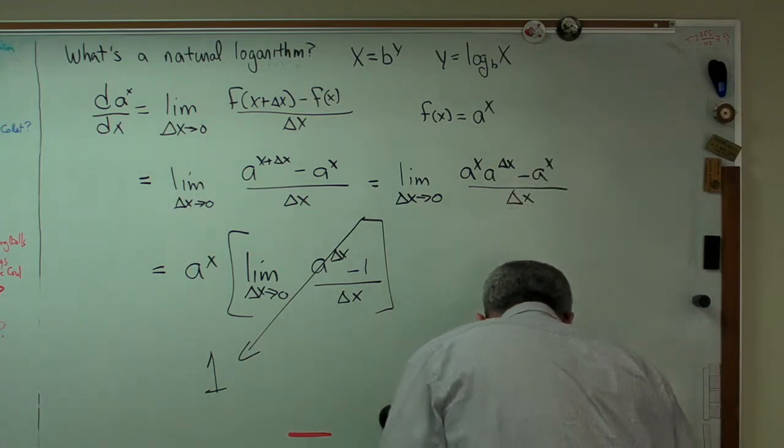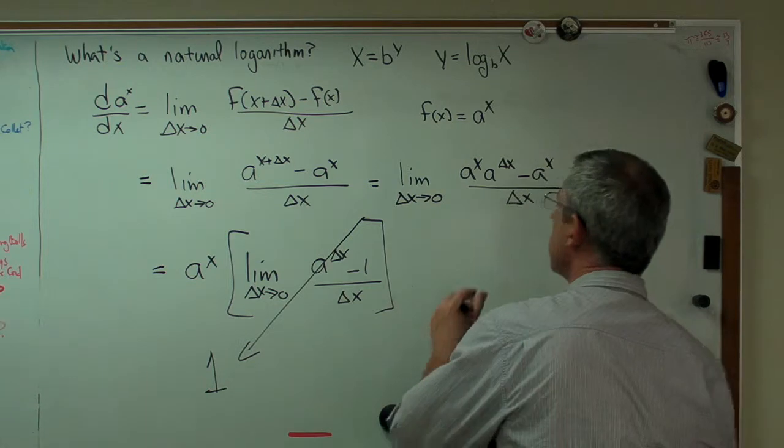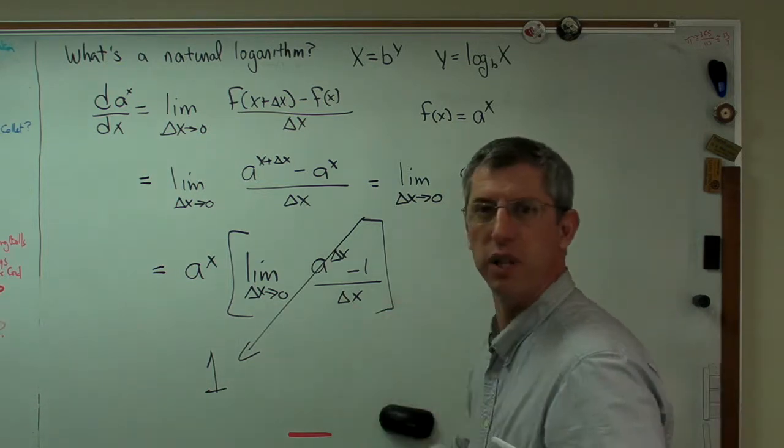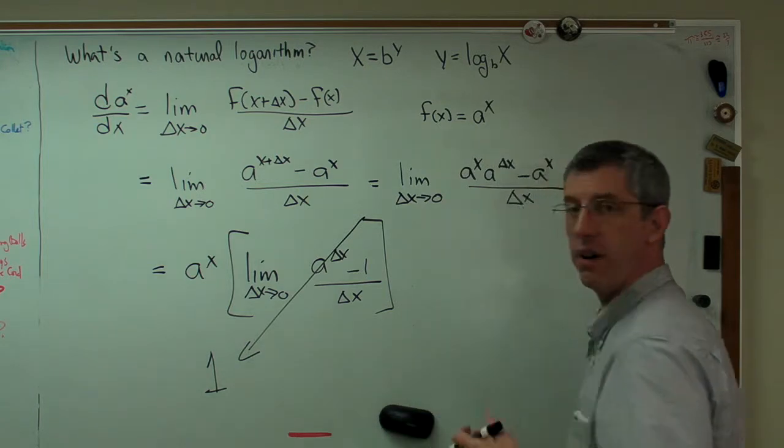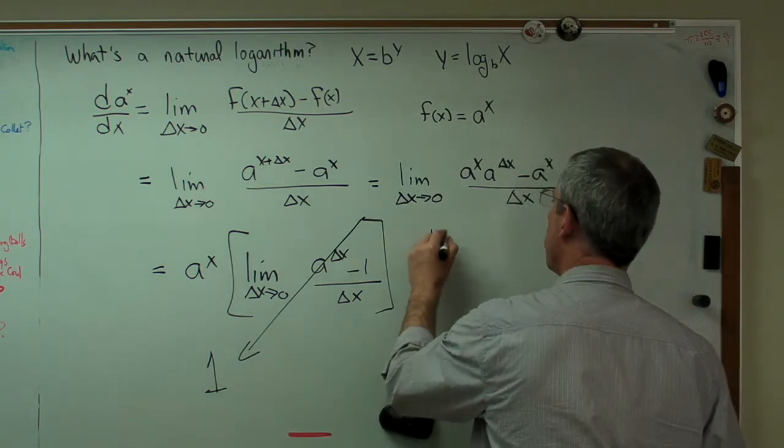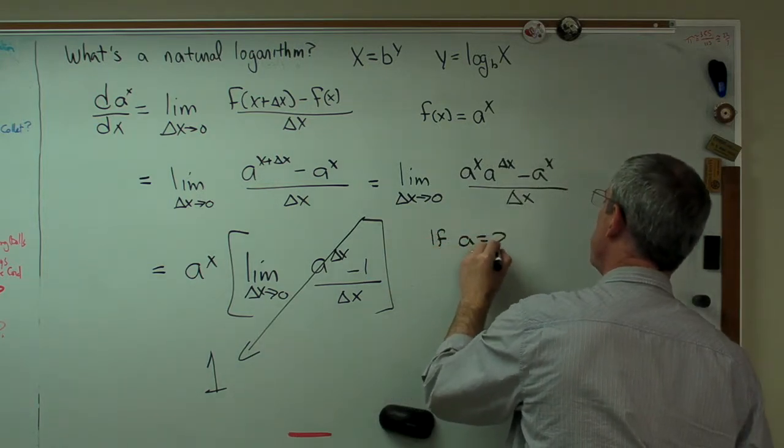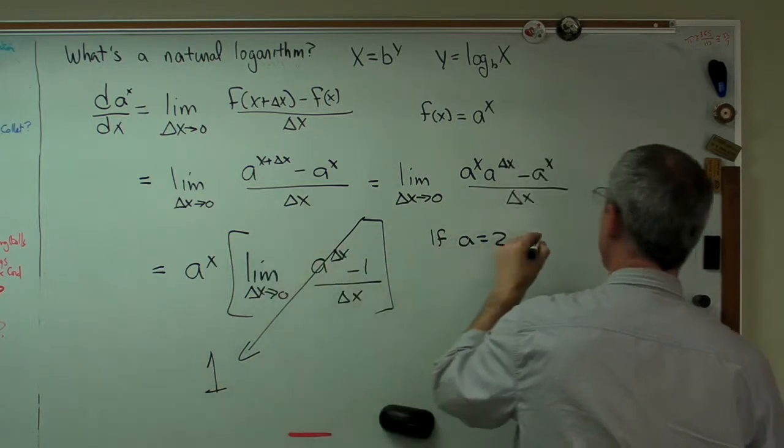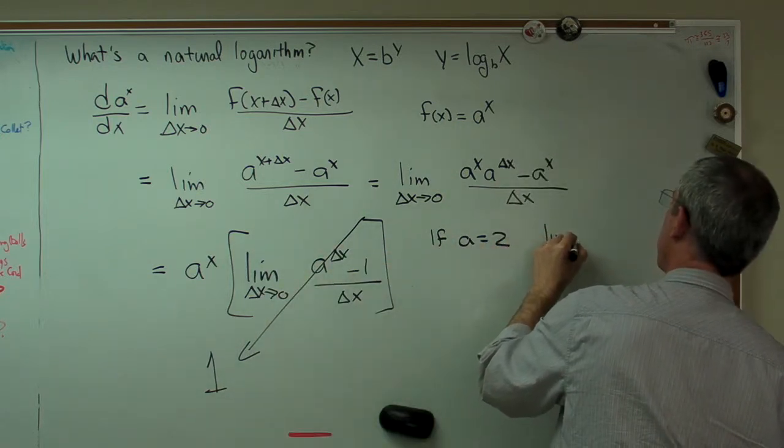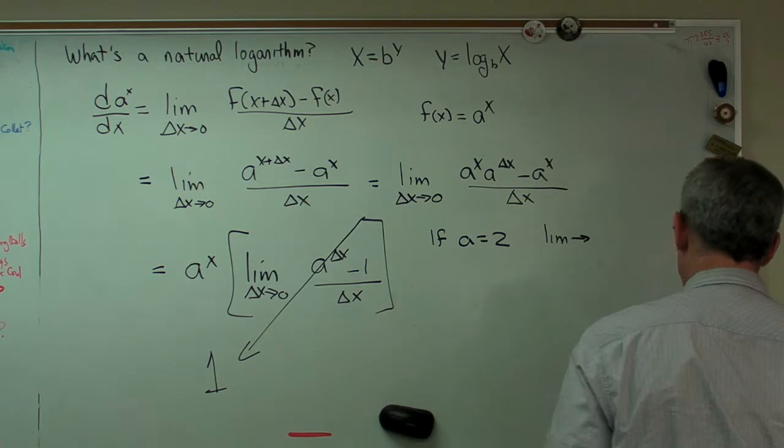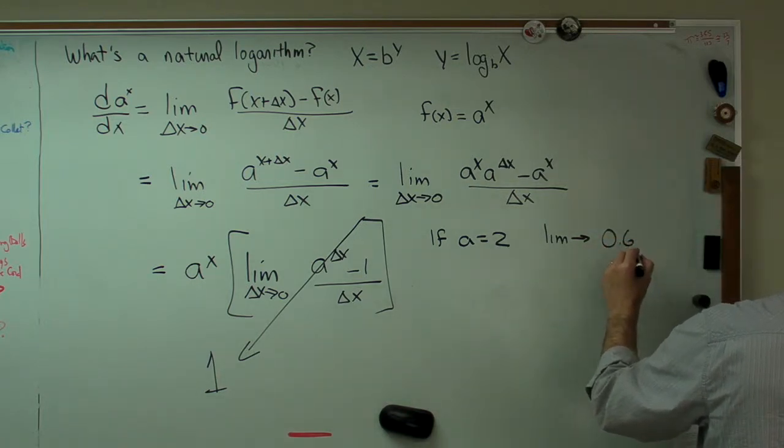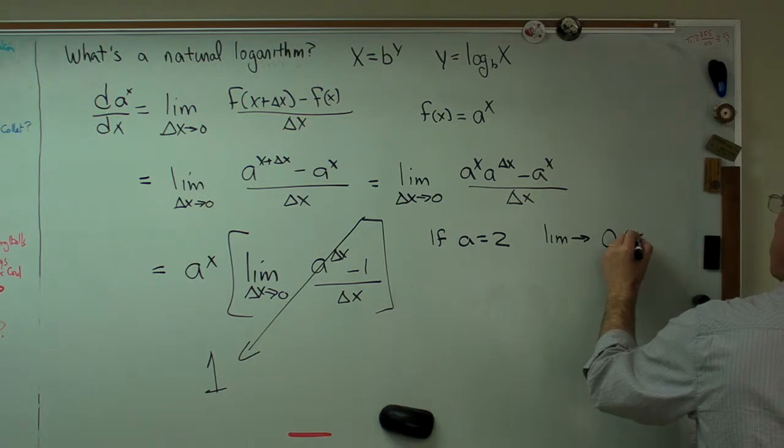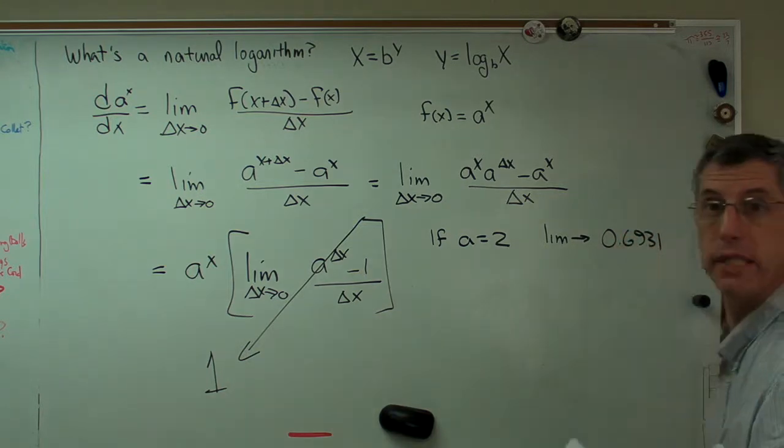Well, there's only one number that makes that happen, and guess what number it is. Now, just to make sure you believe me here, I tried this. I made delta x really small, 10 to the minus 10 or something like that. And I calculated this. If a equals 2, then that limit, then the expression in brackets goes to 0.6931.